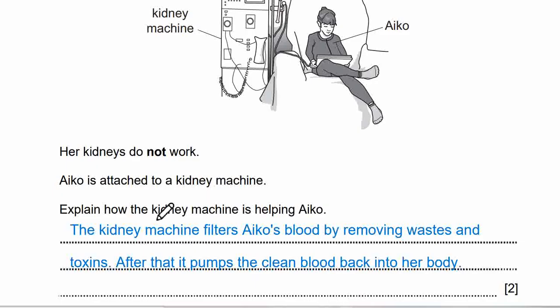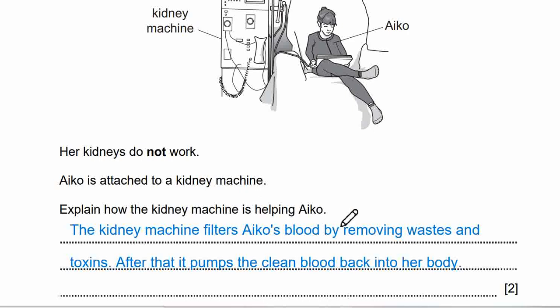This is our answer for question 11 about the kidney machine. The kidney machine filters Eico's blood by removing waste and toxins. After that, it pumps the clean blood back into her body.